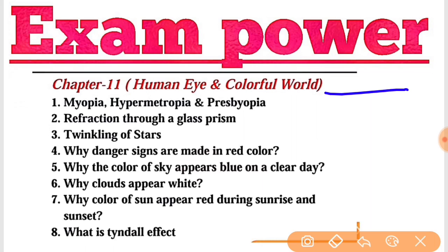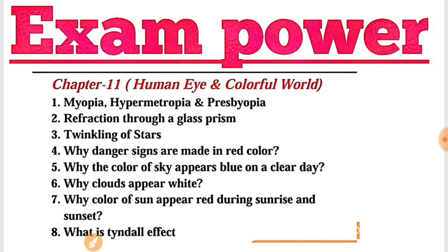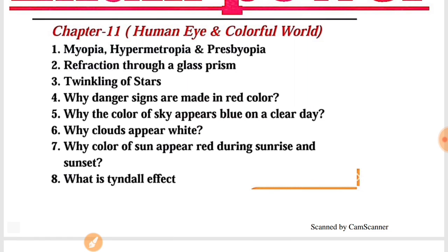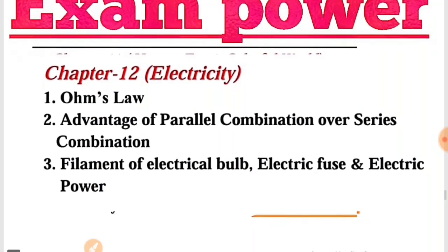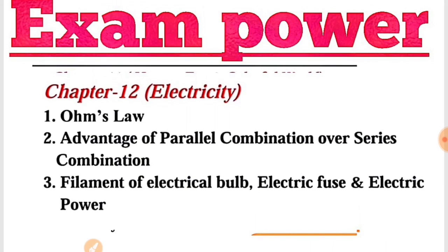इस chapter में से भी आपको important questions पूछे जा सकते हैं, जैसे Twinkling of Stars, Why Danger Signs are made in Red Colour — यानि danger वाला sign जो होता है, किसी भी danger चीज़ के बारे में बताना हो तो उसका symbol red colour का ही क्यों होता है — इसके बारे में question पूछे जा सकते हैं। What is Tyndall Effect — इन सभी topics पर ध्यान दीजिए।